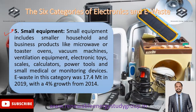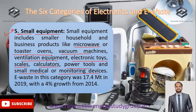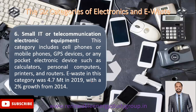The fifth category is small equipment — day-to-day equipment utilized in household, industrial, commercial, and business sectors. This includes microwave ovens, toaster ovens, vacuum machines, ventilation equipment, electronic toys, scales, calculators, power tools, and small medical and monitoring devices. Total e-waste was 17.4 metric tons in 2019, with a 4% growth from 2014.